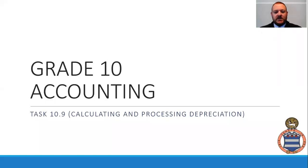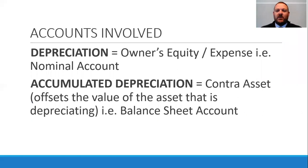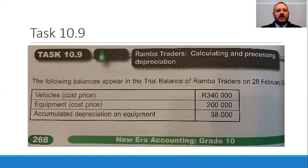We're now going to look at Task 10.9. In this task you'll notice that there was an opening balance given to us for accumulated depreciation equipment, which makes it a little different to 10.8. The accounts involved with this adjustment are depreciation and accumulated depreciation — remembering that accumulated depreciation is the contra asset account. In this question, vehicles are given at a cost price of 340,000, equipment at 200,000, and accumulated depreciation on equipment is 38,000.